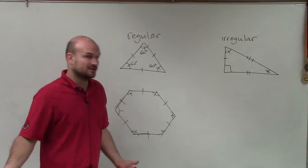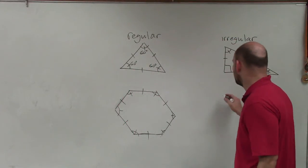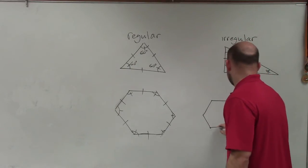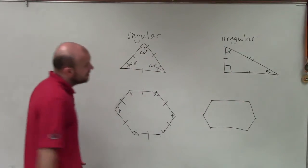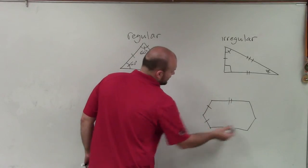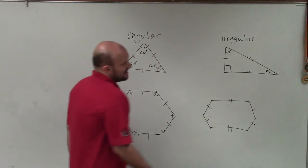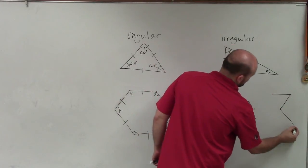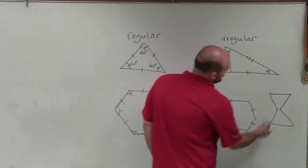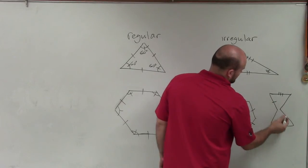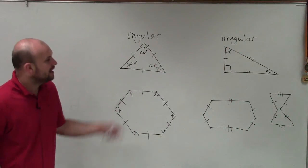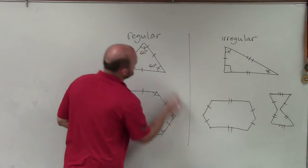However, an example of an irregular one, it can be convex or it can be concave. It doesn't really matter. I can do one that would be like this. So that would be an example of a concave polygon, but it's not regular. You can obviously see that these two sides are much longer than these other sides. And I could also just make up an irregular or convex one. So that would be an example of a convex where all the sides are not the same. I always pretend they look like that or something. But then again, these are examples of irregular and regular.